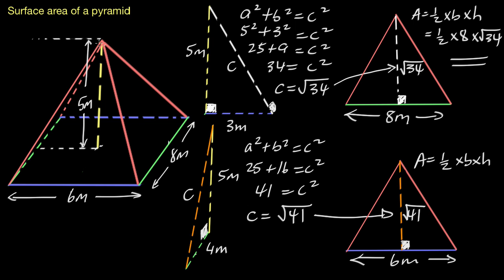That orange slant height is the same line that runs down the face of that triangle on the pyramid. So we're now finding the area of this triangle: half times the base of six meters times the square root of 41 for the height. That's enough information — we can use that in one big calculation at the end.